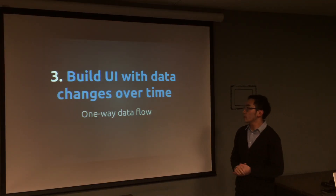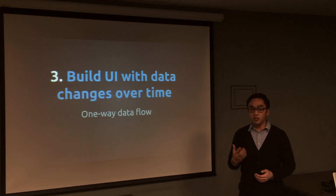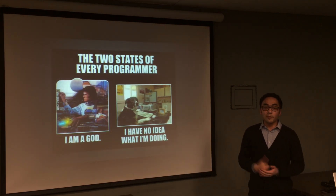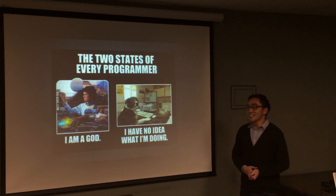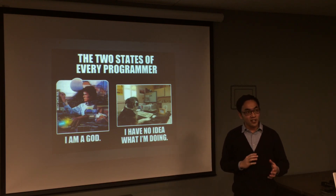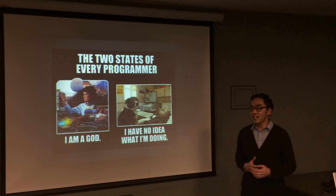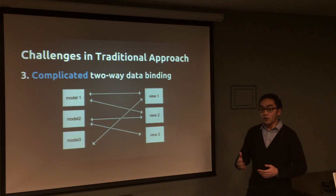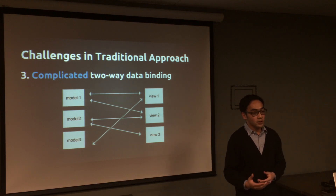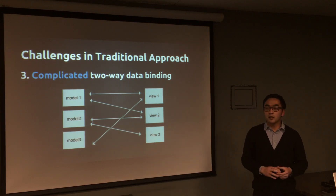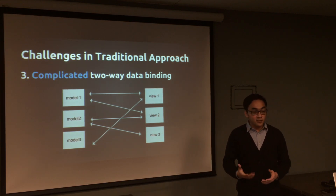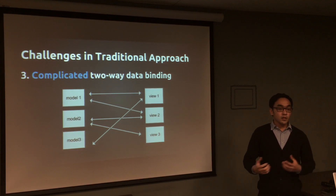The main thing React is trying to solve is how to build a UI with data that changes over time — and this is all about states. It's a concept that's quite confusing. Most of us are familiar with AngularJS's two-way data binding: when you update a view, you update a model; when you update a model, you update a view. It's great for a single view with a single model, but it gets really complicated with multiple models and multiple views.